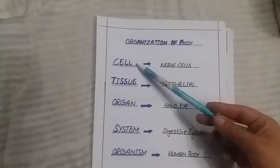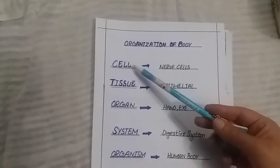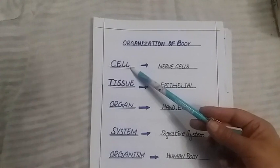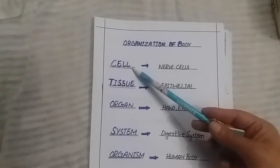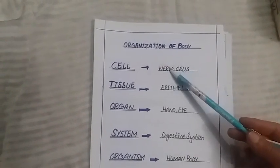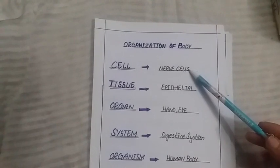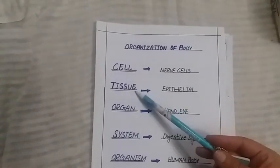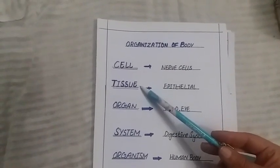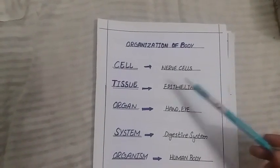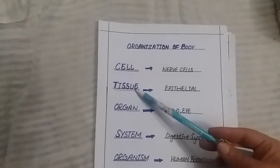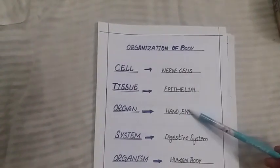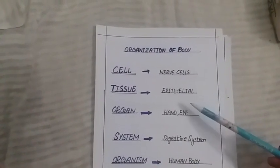We will start with the word cell. You know what is cell? Cell is the structure and basic unit of living things. It is the smallest unit of living things — we cannot consider our life without cell. Examples of cells are nerve cells. Cells combine and join together to form tissue. Examples of tissue are epithelial tissue. Then tissues combine and join together to form an organ. Examples of organs are hand, eye, nose, stomach.